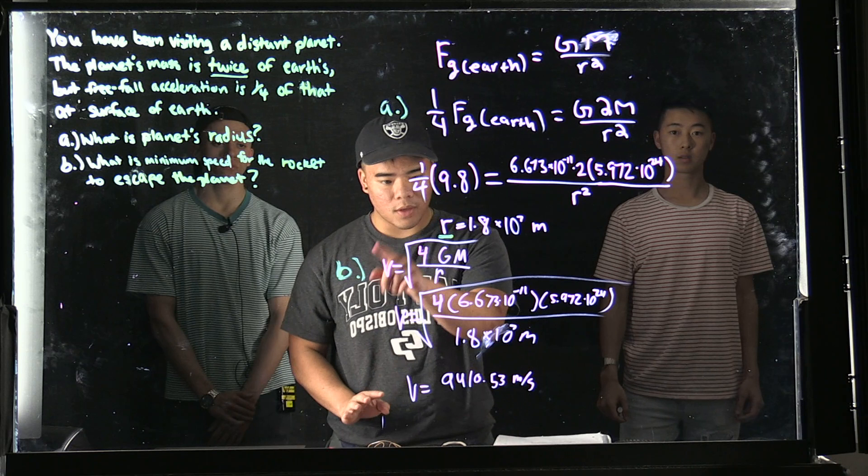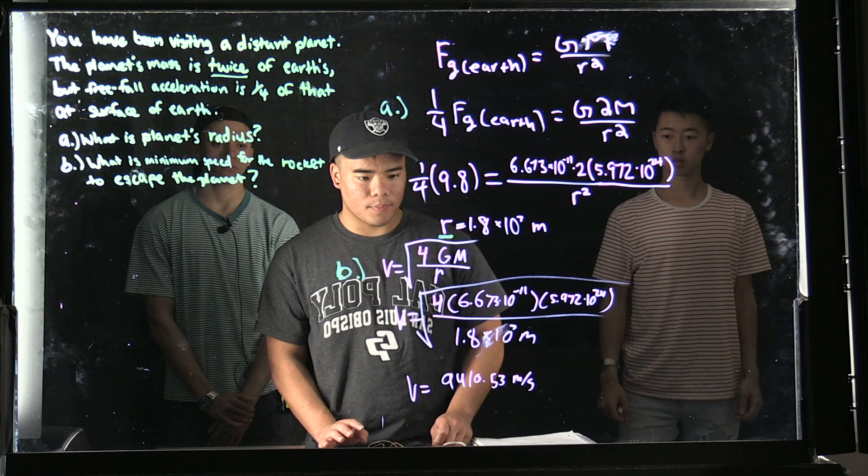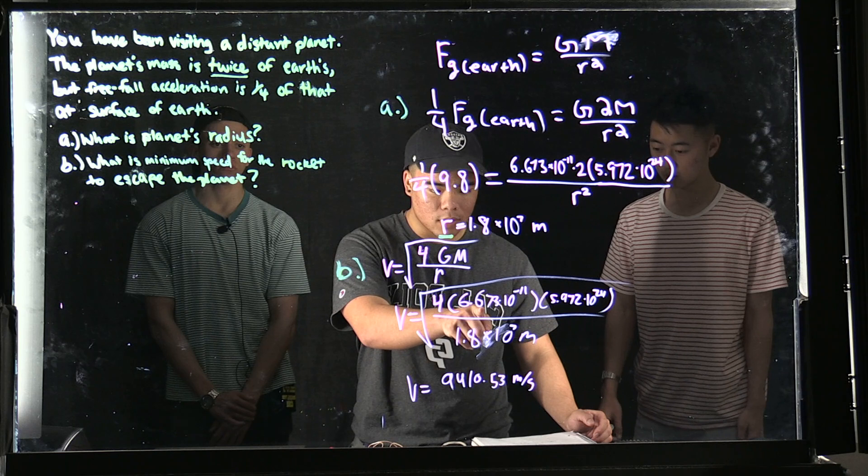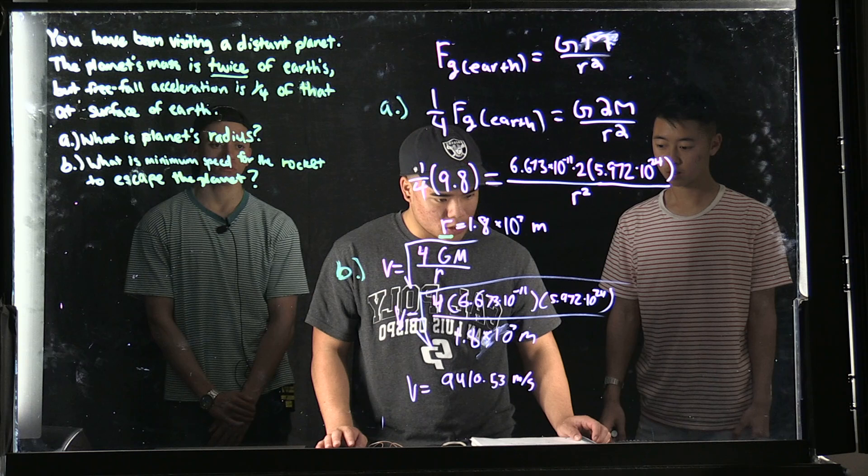The equation we used to solve for V is V = √(4GM/r). Since we solved for the radius in Part A, we can plug in all our values. The gravitational constant is 6.673 × 10⁻¹¹.